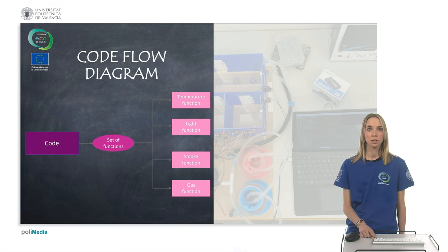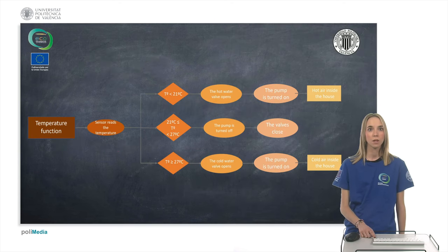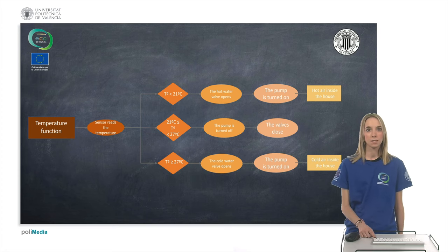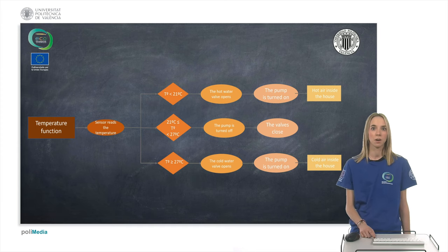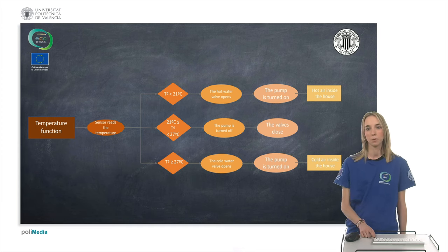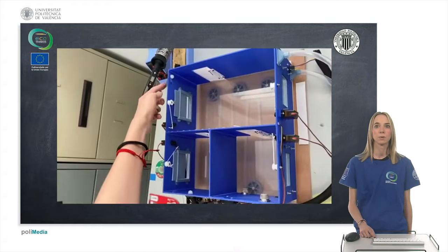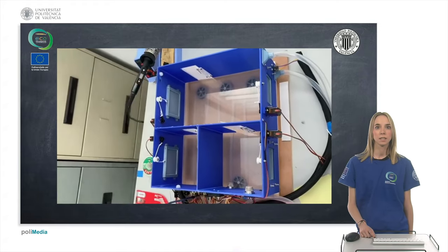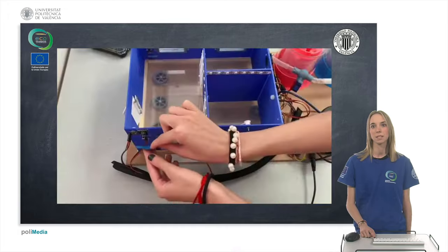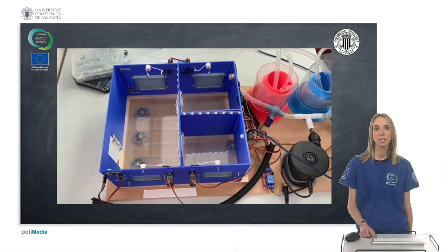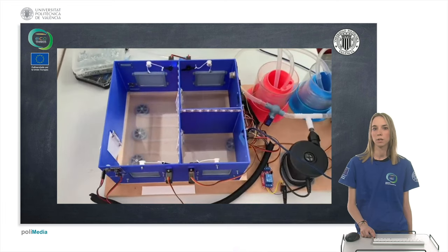The code was created using the Arduino program and it has four functions. Focusing on the temperature function, as it's related to the passive system, the chosen temperature ranges are those stipulated by law in Spain for public places. This is a video where you can first see how the home automation part works and then the functioning of the passive system. By heating the sensor with your finger or cooling it with compressed air, the pump will turn on and the system will start running.